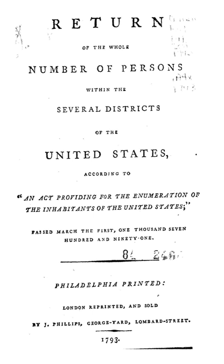In the United States, census data indicate that the number of children in interracial families grew from less than 1.5 million in 1970 to about 2 million in 1990. In 1990, for interracial families with one white American partner, the other parent was Asian American for 45%.